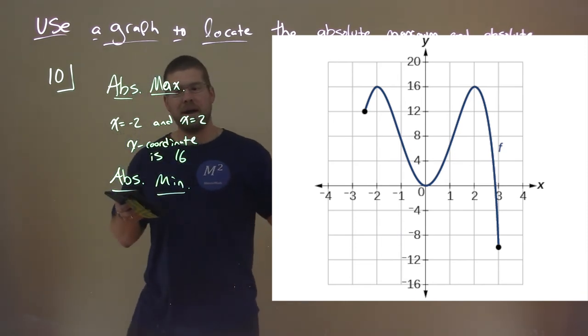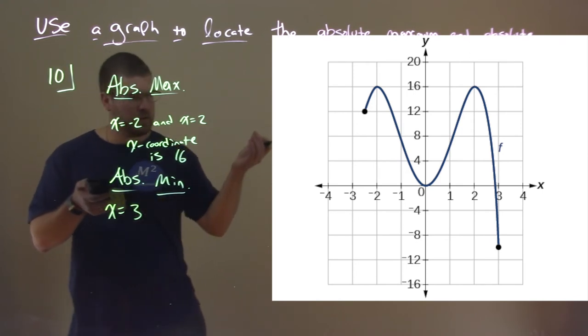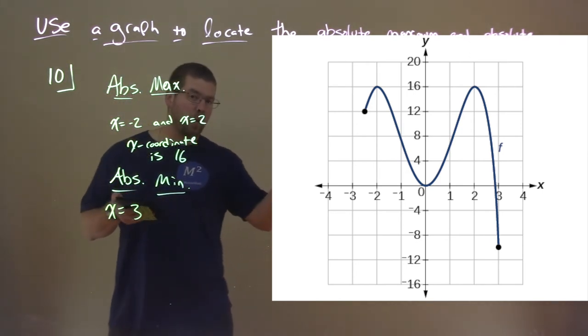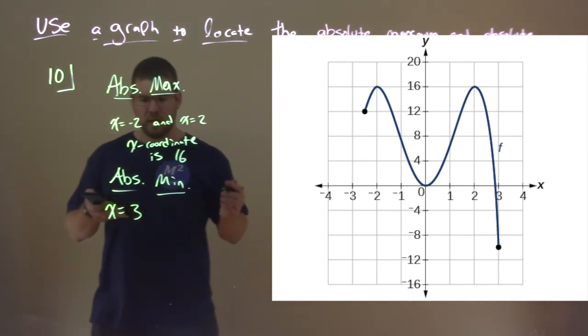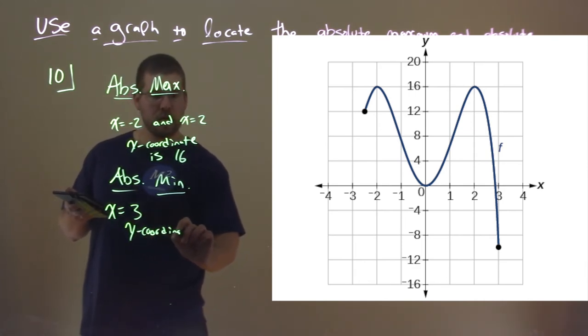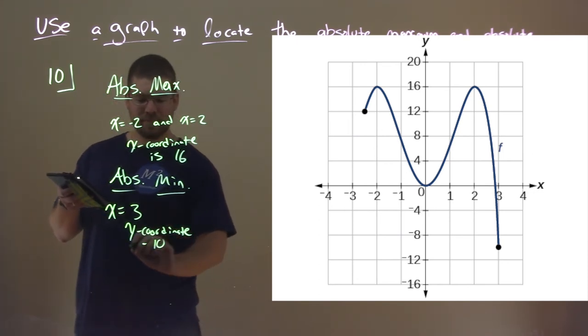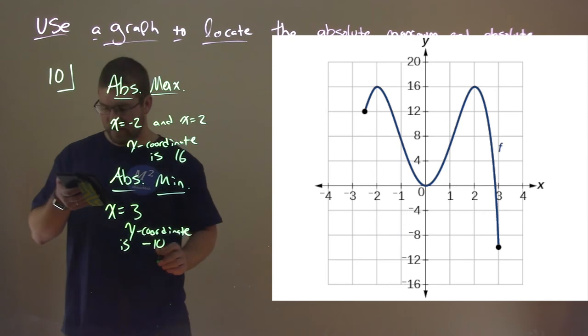But that's actually not the absolute minimum. The absolute minimum happens all the way at x equals positive 3. And that is the x value for the lowest y value on our graph. And the y coordinate here, it's kind of hard to see from the graph, but according to my notes here is negative 10. So, the y coordinate there is negative 10.